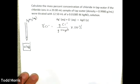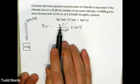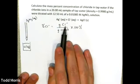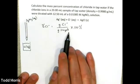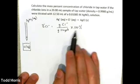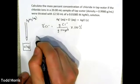To find the mass percent chloride in my sample, I need to know two numbers: the grams of chloride in the sample and the grams of sample. So this will be a two-part plan.